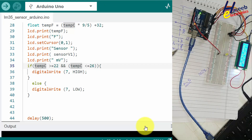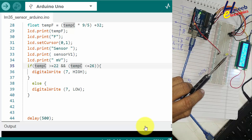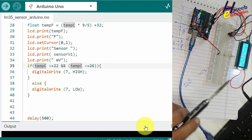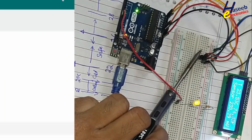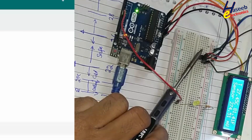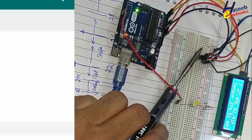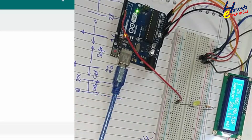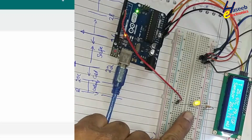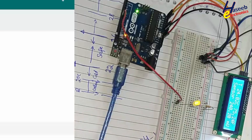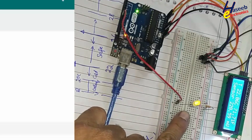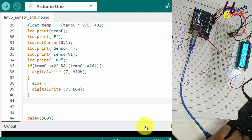I will heat up the sensor and check if the LED remains on between 22 and 26 degrees. At 22 degrees it turned on. When the temperature increased above 26 degrees the LED turned off. It must turn on from 26 degrees down to 22 degrees, and below 22 degrees it must turn off. Yes, that's good.